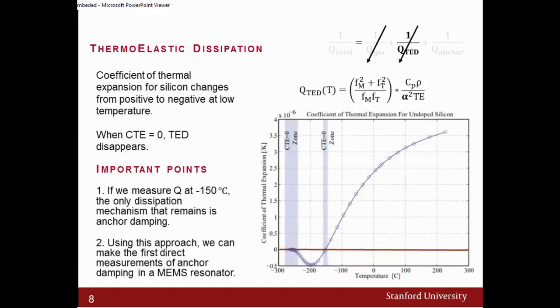For silicon resonators, the coefficient of thermal expansion goes from positive to negative at low temperature. This coefficient of thermal expansion can be eliminated at two different zones. For our specific case, we are going to focus on eliminating the coefficient of thermal expansion at negative 150 degrees Celsius. This is critical because we are going to use this as a base for our work. At that specific point, at negative 150 Celsius, the CTE becomes zero. At this point we know that we do not have any gas damping, and we also know that we don't have any TED if we are passing the negative 150 Celsius mark.